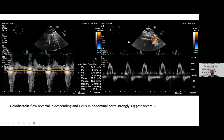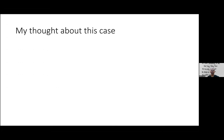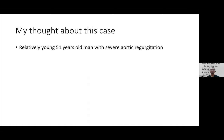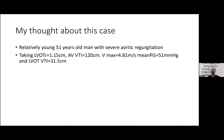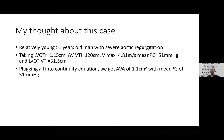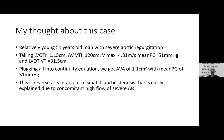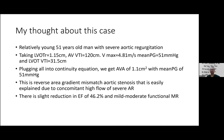Summary for case five: 51-year-old with severe aortic regurgitation, LVOT 1.15 cm, VTI approximately 120 cm, peak velocity more than 4 m/s. Reverse area-gradient mismatch: AVA 1.1 cm² with mean gradient of 51 mmHg — easily explained by concomitant high flow from severe aortic regurgitation. There is a slight EF reduction to 46.2% and mild-to-moderate functional mitral regurgitation.